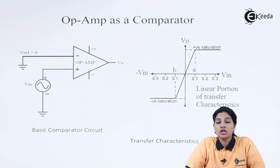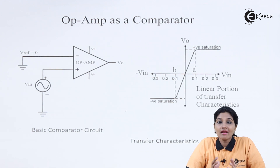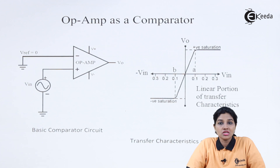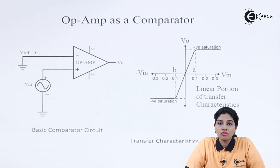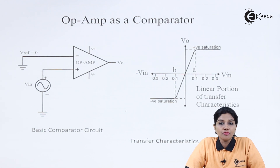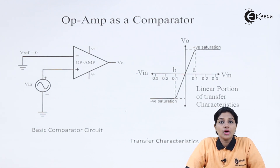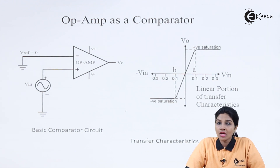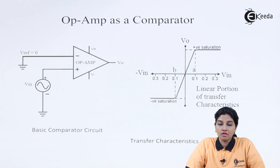We can use it as an amplifier which produces an output that is an exact replica of the input signal but with amplification. It can be used as a filter, or in applications like sample and hold circuits and many more. Most of the time Op Amp is preferred to work in closed loop configuration. But Op Amp can also be used in open loop configuration, and one of the applications of open loop configuration is nothing but the comparator.